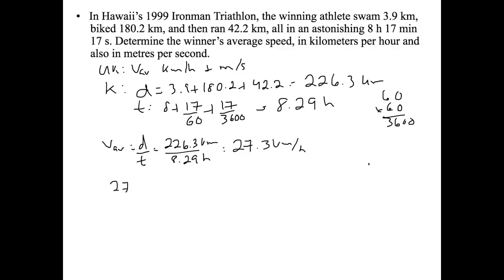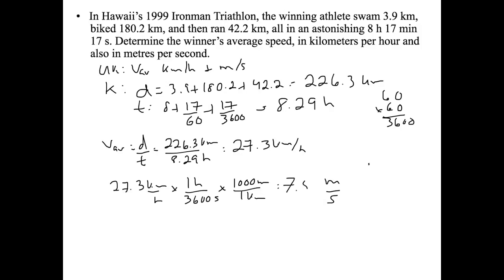Now the second part of the question asks for meters per second. To convert 27.3 kilometers per hour, we put one hour over 3600 seconds, and one kilometer over 1000 meters. We end up with 27.3 times 1000 meters divided by 3600 seconds, which gives us 7.58 meters per second.